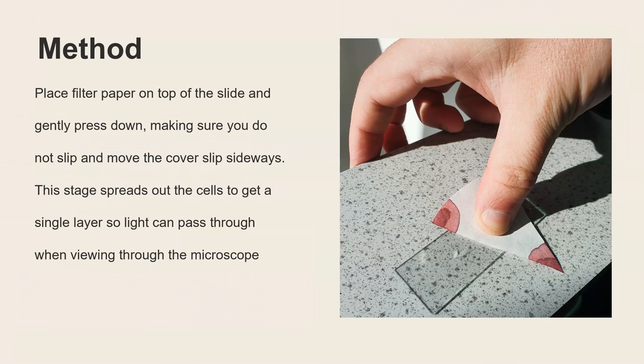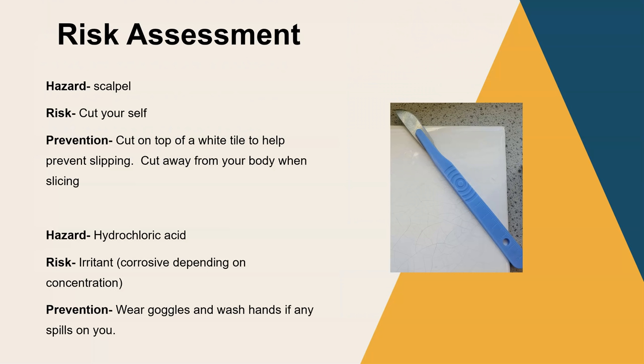Then the very last thing is we need to squash which is what the title of the experiment is root tip squash. So you place a bit of filter paper on top and you push down but you need to do this gently. If you do it too hard you're going to break the glass cover slip. You also need to make sure that you don't accidentally slip and move your cover slip to the side because that defeats the purpose of the squash step. This stage is to squash down gently so you get this really thin layer of cells so the light can then pass through them when you're viewing it under the microscope. If you slide the cover slip you'll end up putting a layer of cells on top of another layer and the light won't pass through and you won't be able to focus your image. You might also actually damage some of the cells and the chromosome so it ruins your image. So that's how we prepare our slide.